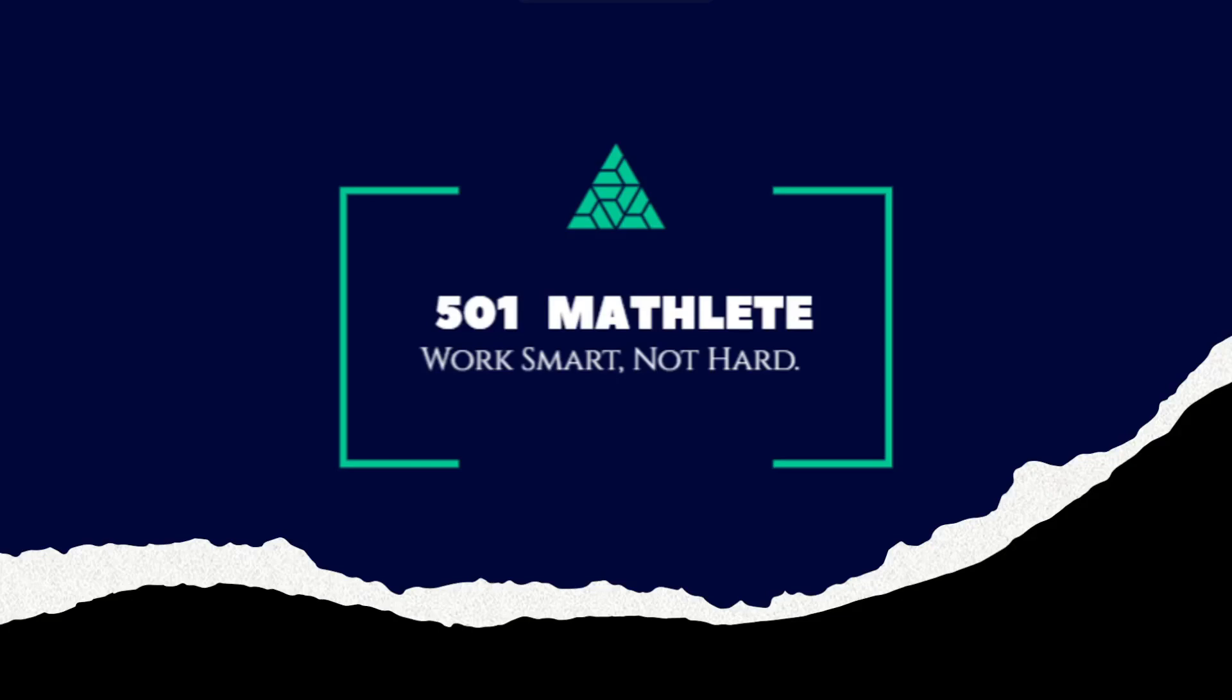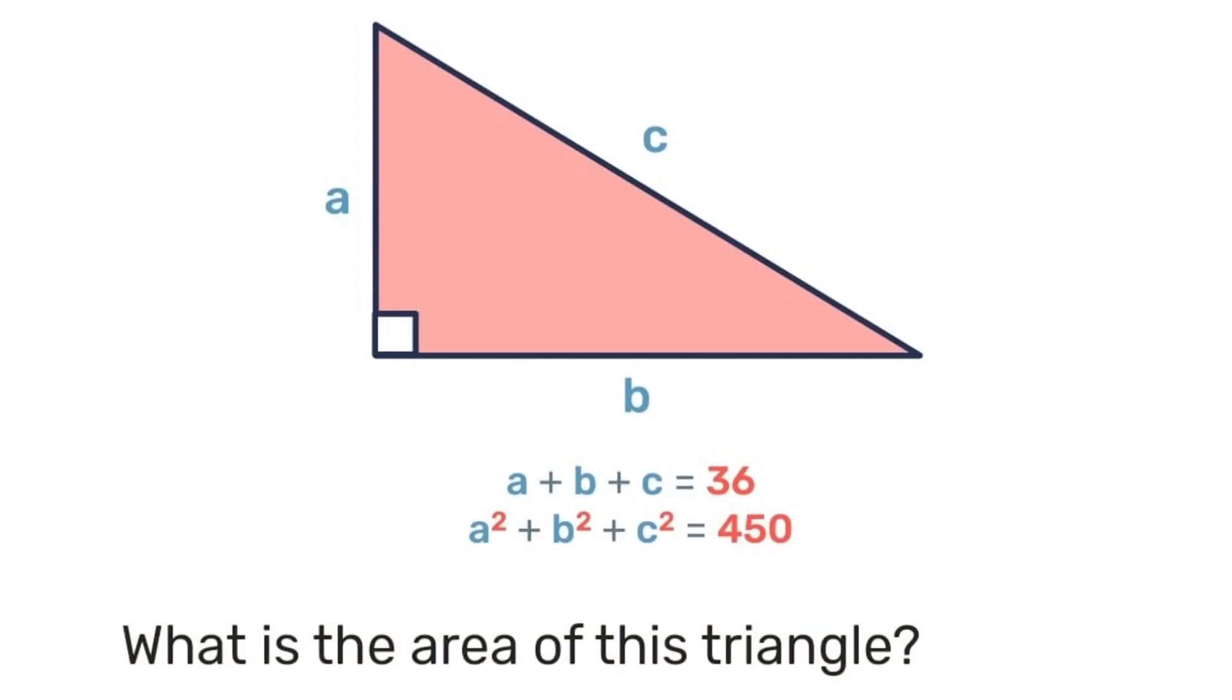Good day and welcome to 501 Matly where we work smart not hard. In today's problem we're given this diagram, a right angle triangle with base b, height a, and hypotenuse c.